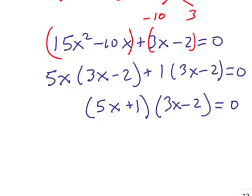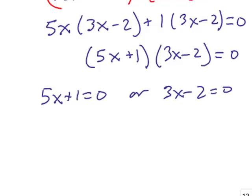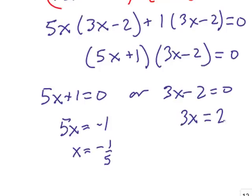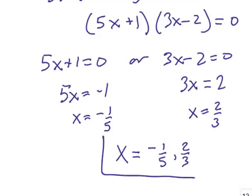We can now factor out 3x minus 2, and what we get is 5x plus 1 times 3x minus 2 equals 0. We set each individual factor equal to 0: 5x plus 1 equals 0, or 3x minus 2 equals 0. Subtracting 1 and dividing by 5 gives x equals negative 1 fifth. Adding 2 and dividing by 3 gives x equals 2 thirds. We write the two solutions as x equals negative 1 fifth, 2 thirds.